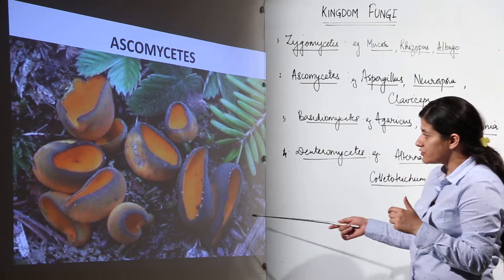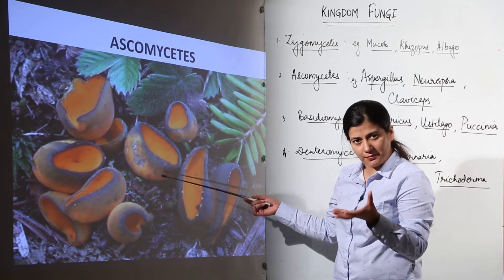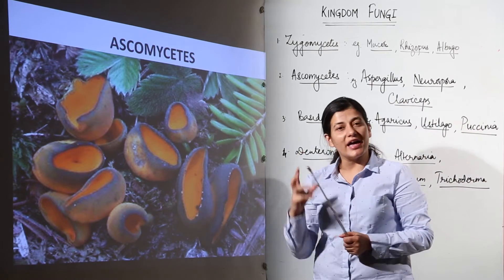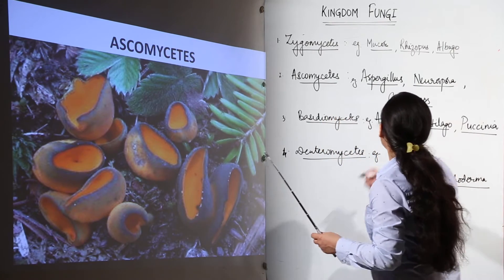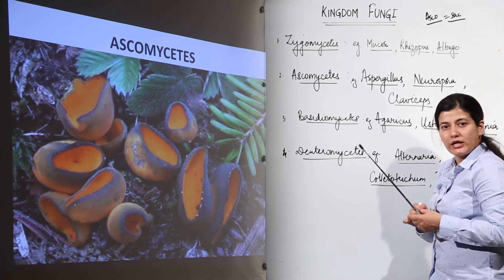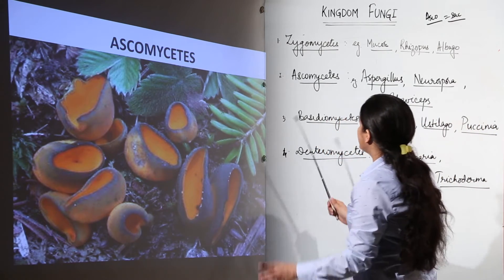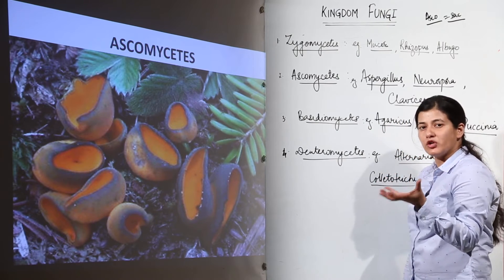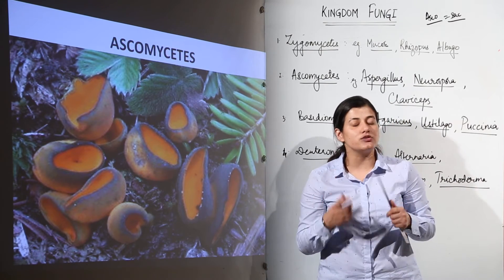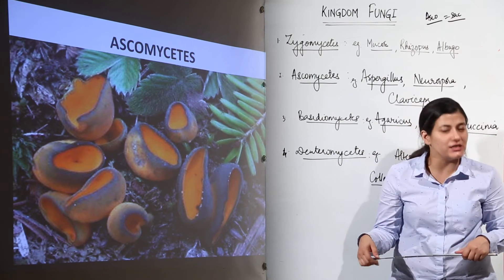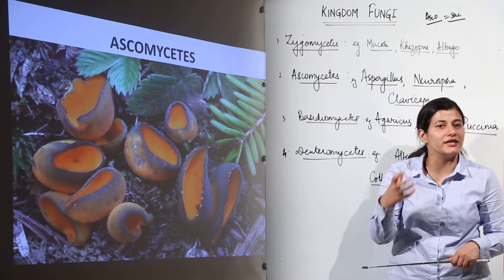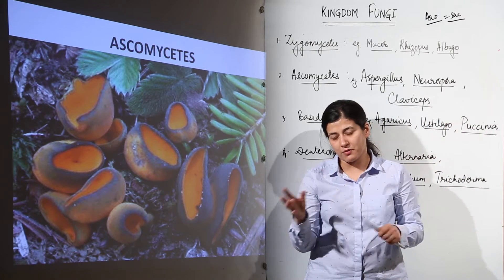Moving to the next division: as you can see, these are cup-shaped fungi, and Ascomycetes is the name of this category. The name 'asco' refers to sac. Ascomycetes are termed so because 'asco' means a sac or cup-shaped fruiting body, which is the characteristic feature of this division. The classification of Ascomycetes and Basidiomycetes is made on the type of fruiting body inside which the meiotic spores are developing.